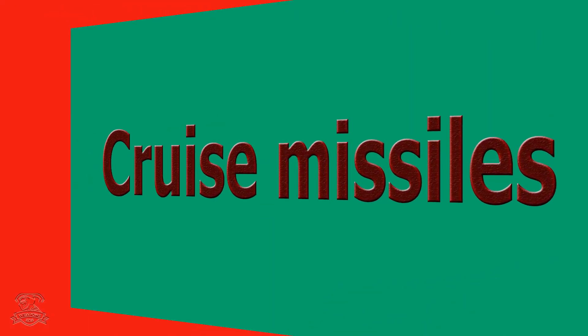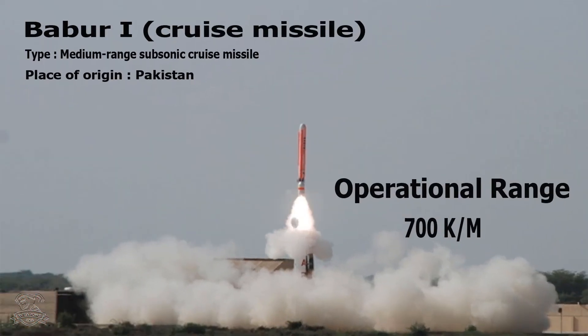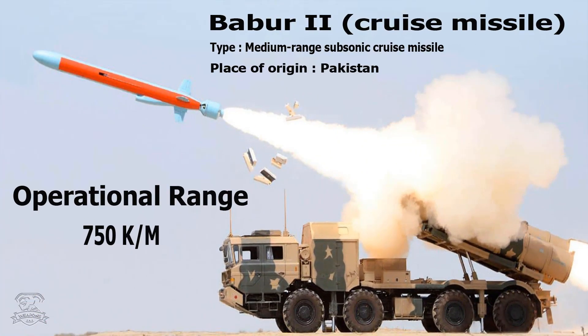Cruise Missiles. Babur-1 Cruise Missile: Type – Medium Range Subsonic Cruise Missile, Place of Origin – Pakistan, Operational Range – 700 km. Babur-2 Cruise Missile: Type – Medium Range Subsonic Cruise Missile, Place of Origin – Pakistan, Operational Range – 750 km.